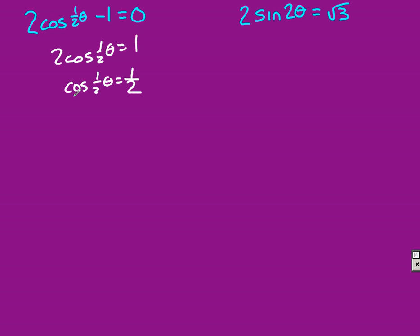So where do we got cosine equaling 1 half? Well, that's 60 degrees, and we want quadrants 1 and 4 for cosine. So that means 1 half theta, that's our inside, has to equal 60 degrees and 300 degrees.